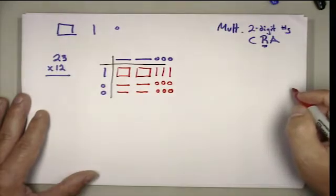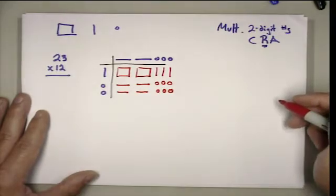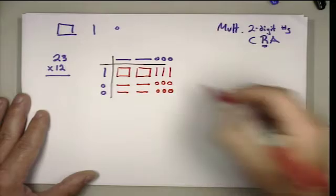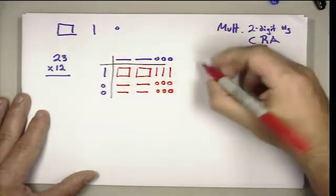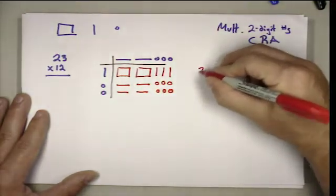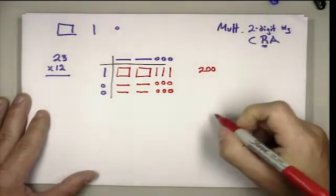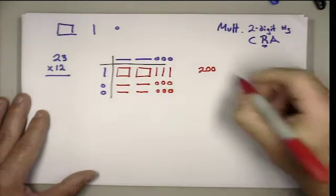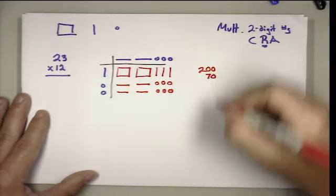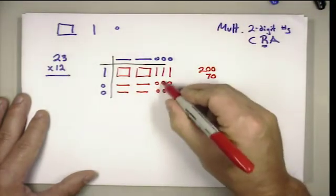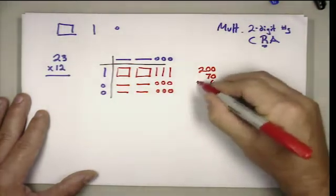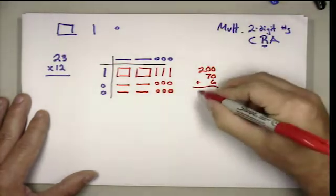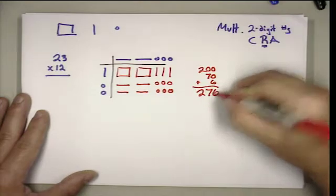So now I've done the multiplication, I've come up with my area model, and so now the question is what's that worth. Well I count up my pieces, I have two hundreds and two hundreds are worth two hundred. I have one, two, three, four, five, six, seven tens, seven tens are worth 70. And I have one, two, three, four, five, six ones which are worth six. When I add up those partial products, that's two hundred seventy six.